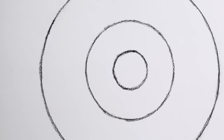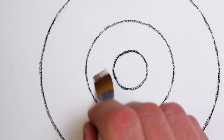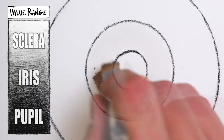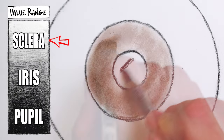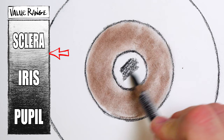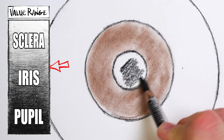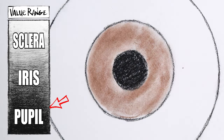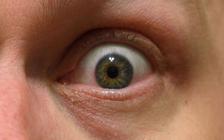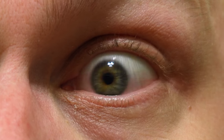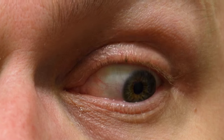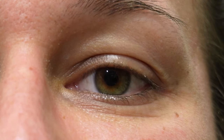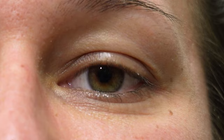The simplified value range of the eye sees lights to mid-tones in the sclera, mid-tones to darks in the iris, and black for the pupil. The overall value of the iris ranges depending on the color of the eye.